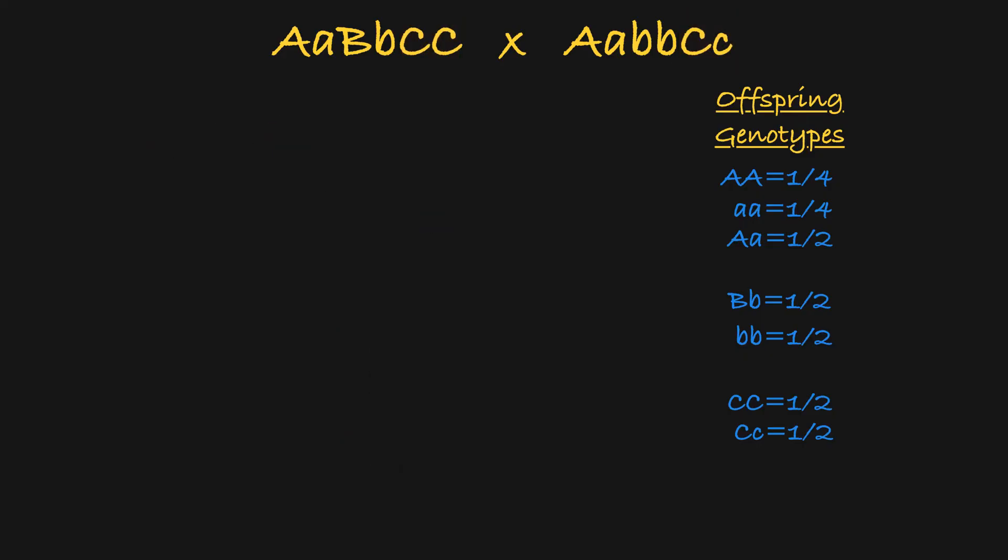Now we have all the information we need to set up a branched line diagram for this cross. It will show us all of the possible offspring genotypes and allow us to calculate each genotype's probability.